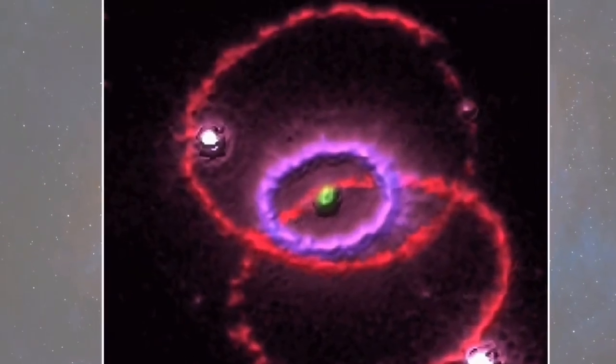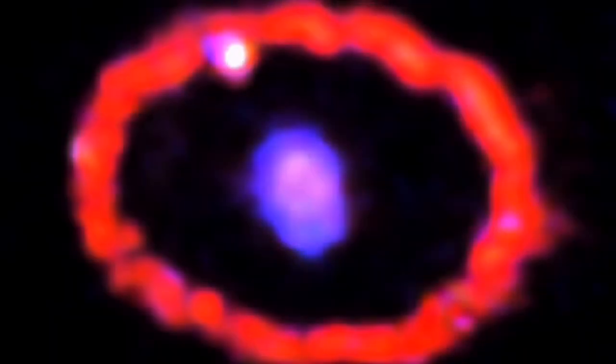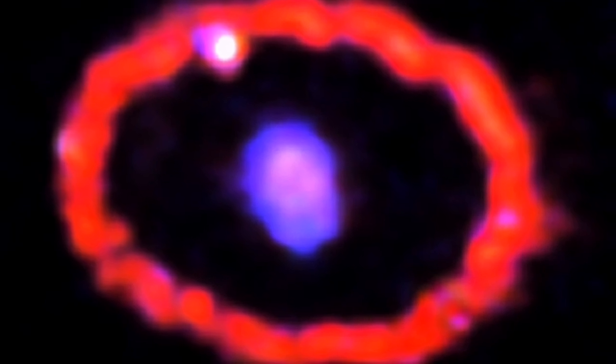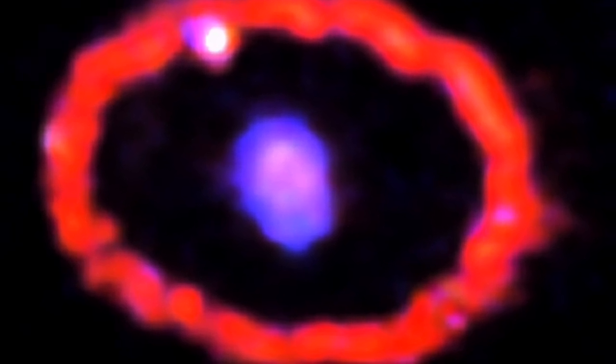A quark star that intermittently erupts quark matter could quickly convert a neutron star orbiting it in a binary system into an erupting quark star as well.